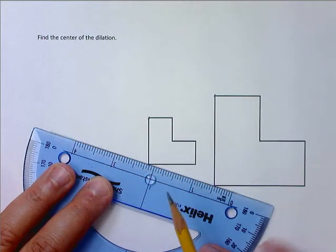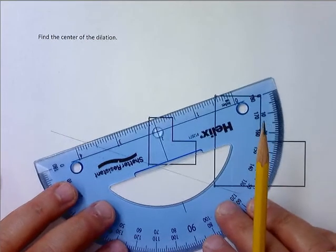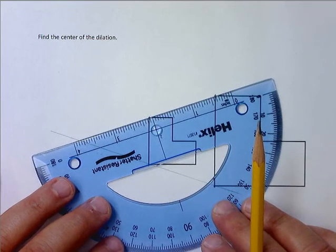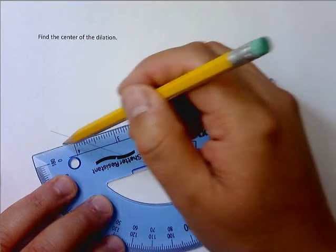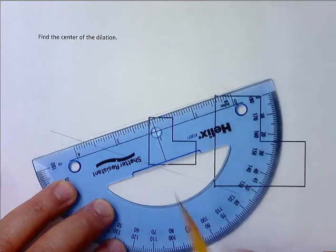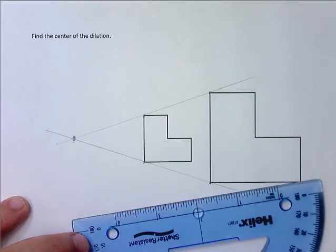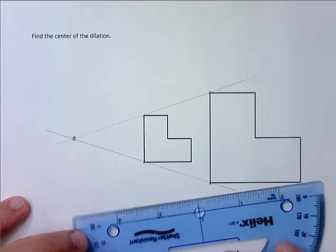Draw a line, line it up again with the other two, draw a line, and you're done. You found it. The intersection of those two lines is the center of your dilation.